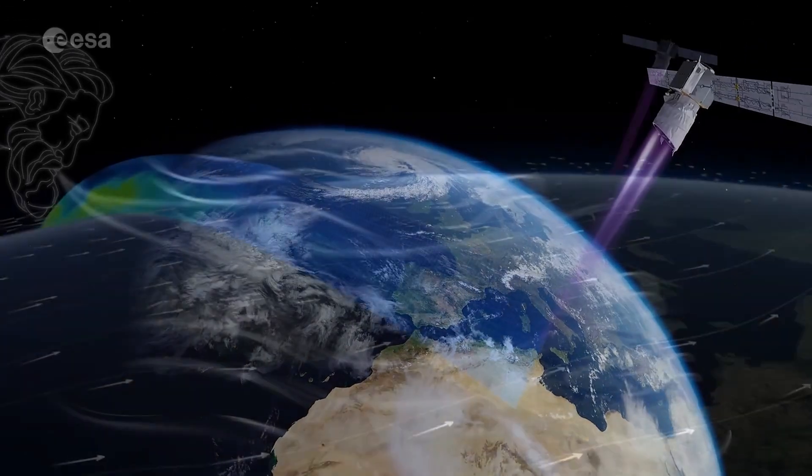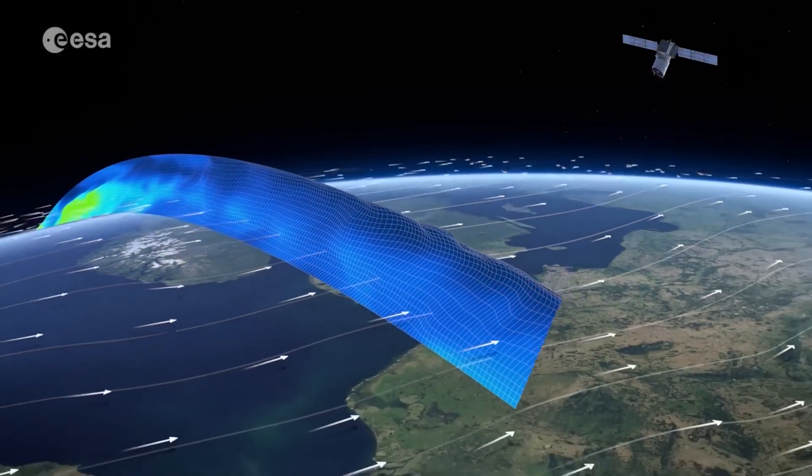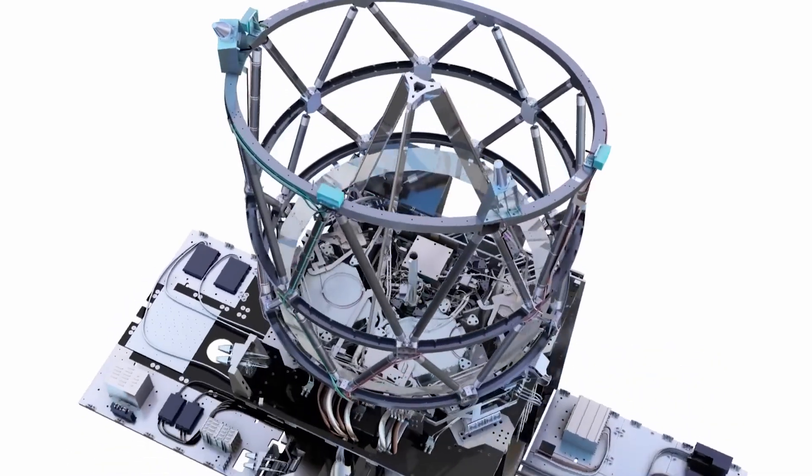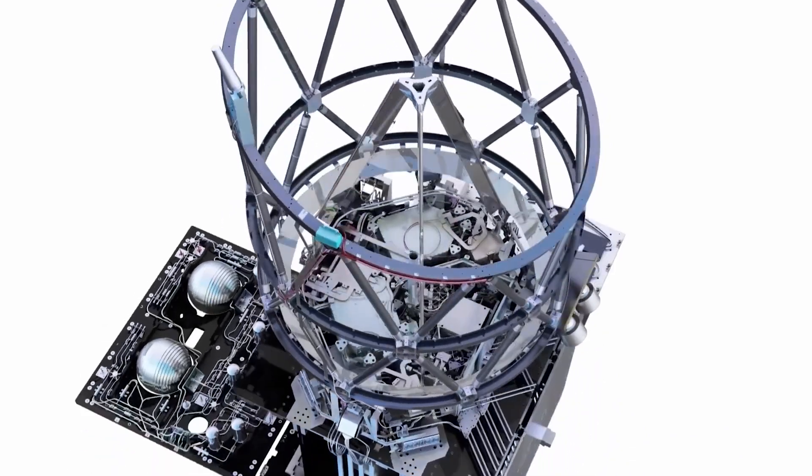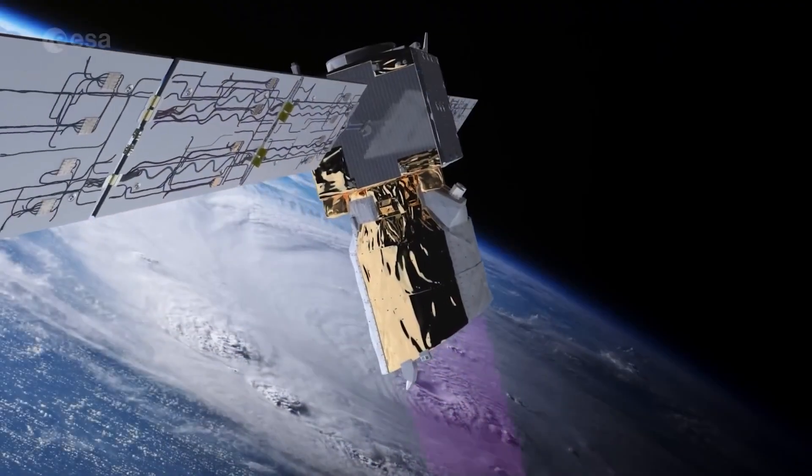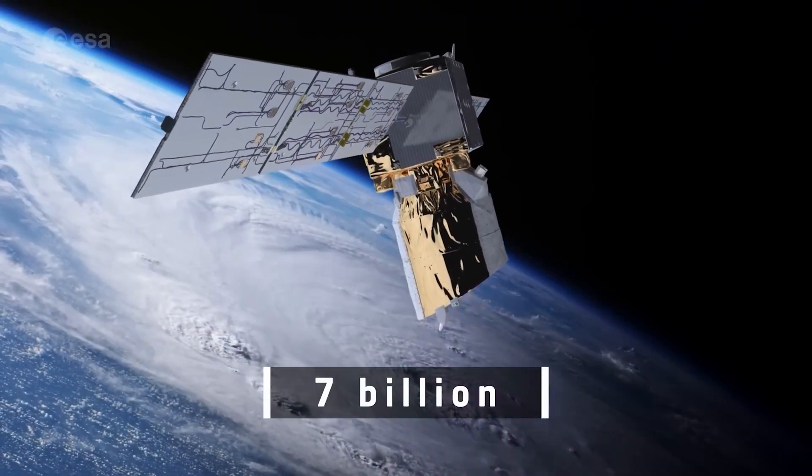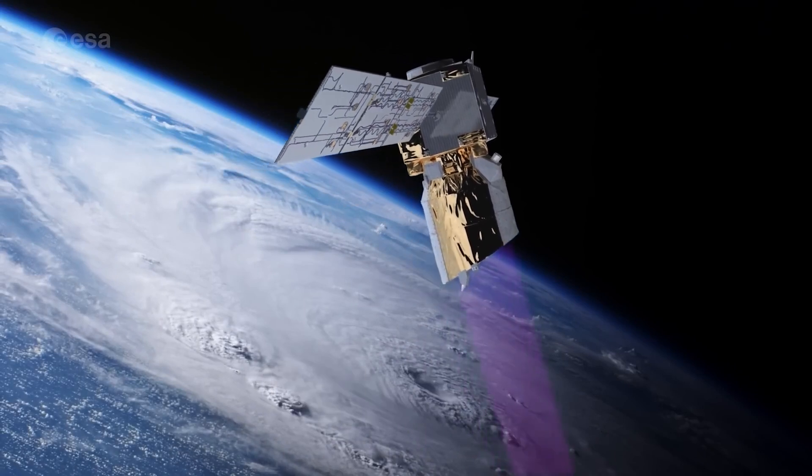Named after Aeolus, the keeper of the winds in Greek mythology, the satellite carries one of the most sophisticated instruments ever to be put into orbit. The Aladdin instrument beamed down 7 billion pulses of UV light to profile Earth's wind.